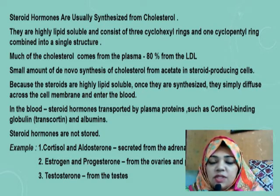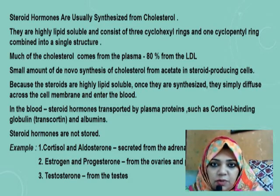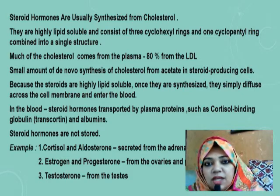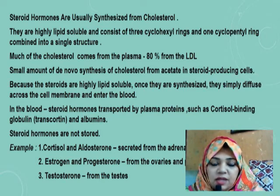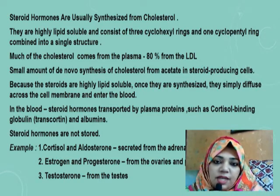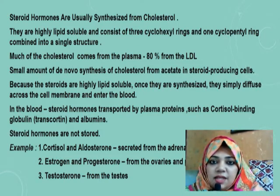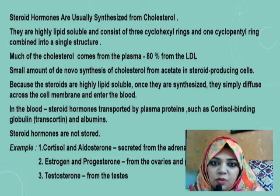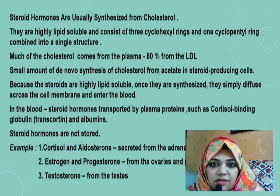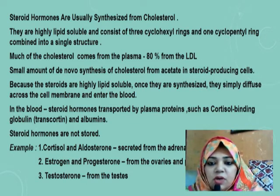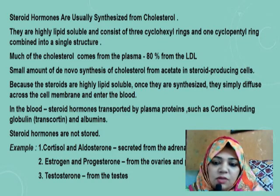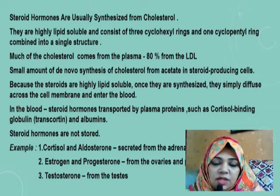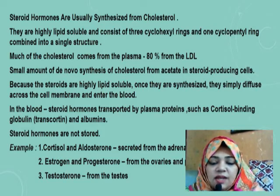Because steroids are highly lipid soluble, once they are synthesized inside the cell they diffuse across the cell membrane and enter the blood. In the blood, steroid hormones are carried by plasma proteins such as cortisol-binding globulin, also known as transcortin, and albumins. Another important fact is that steroid hormones are not stored in our body, unlike protein hormones which are stored in secretory vesicles.